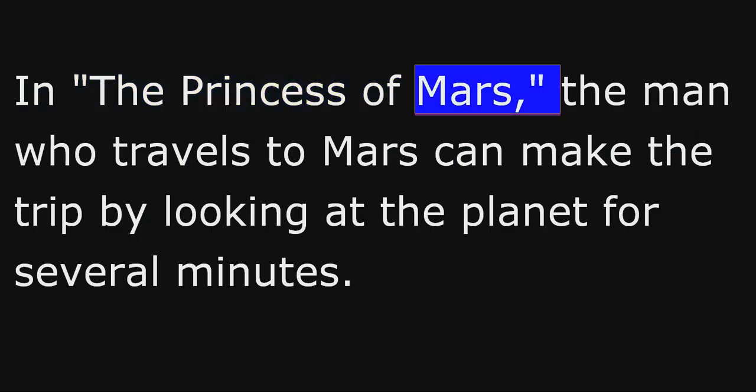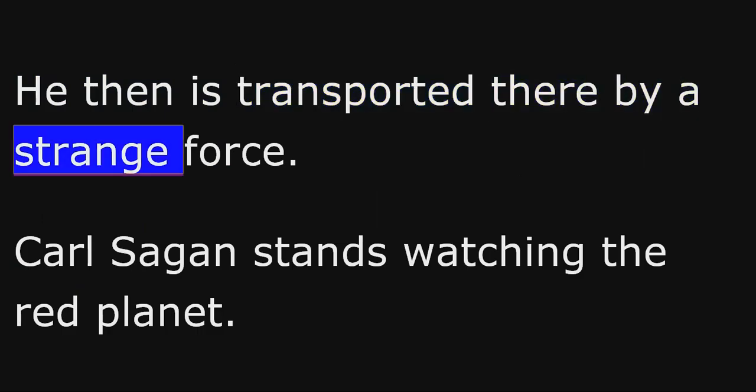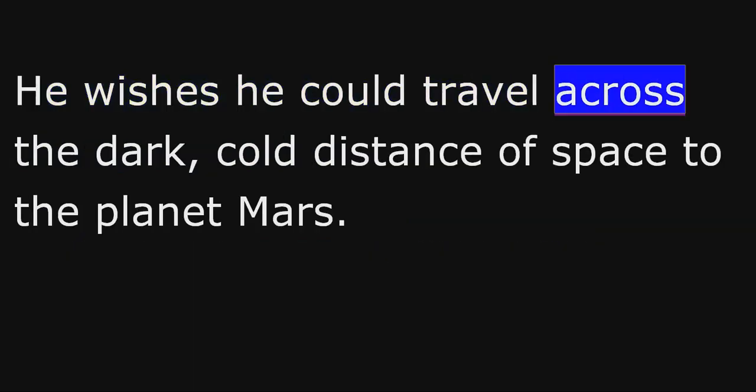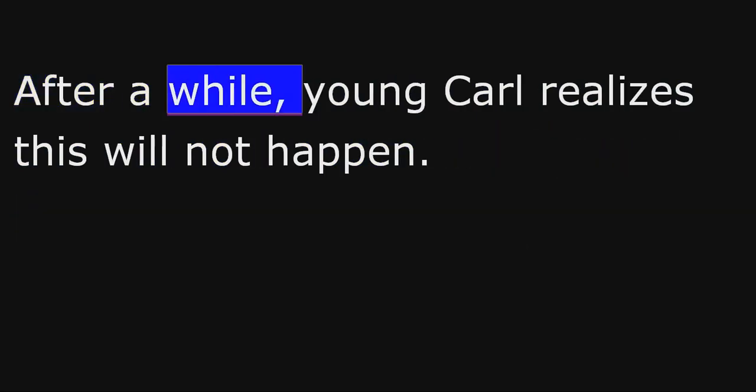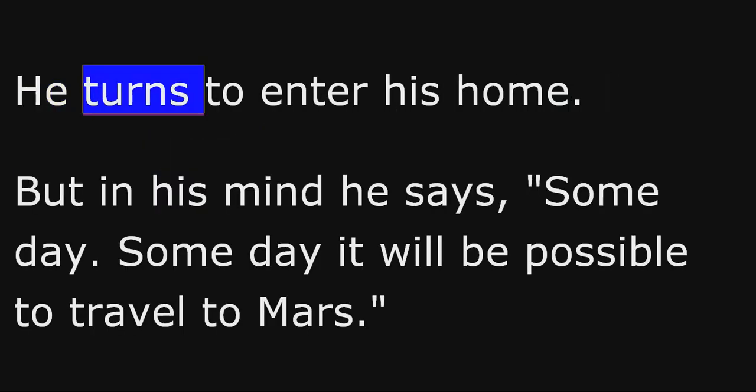In The Princess of Mars, the man who travels to Mars can make the trip by looking at the planet for several minutes. He then is transported there by a strange force. Carl Sagan stands watching the red planet. He wishes he could travel across the dark, cold distance of space to the planet Mars. After a while, young Carl realizes this will not happen. He turns to enter his home. But in his mind, he says, 'Some day, some day it will be possible to travel to Mars.'